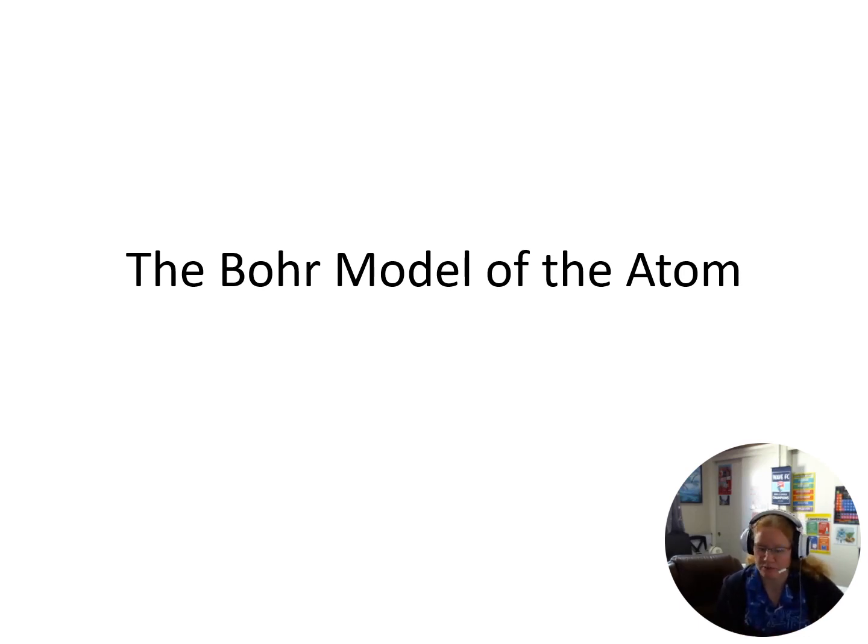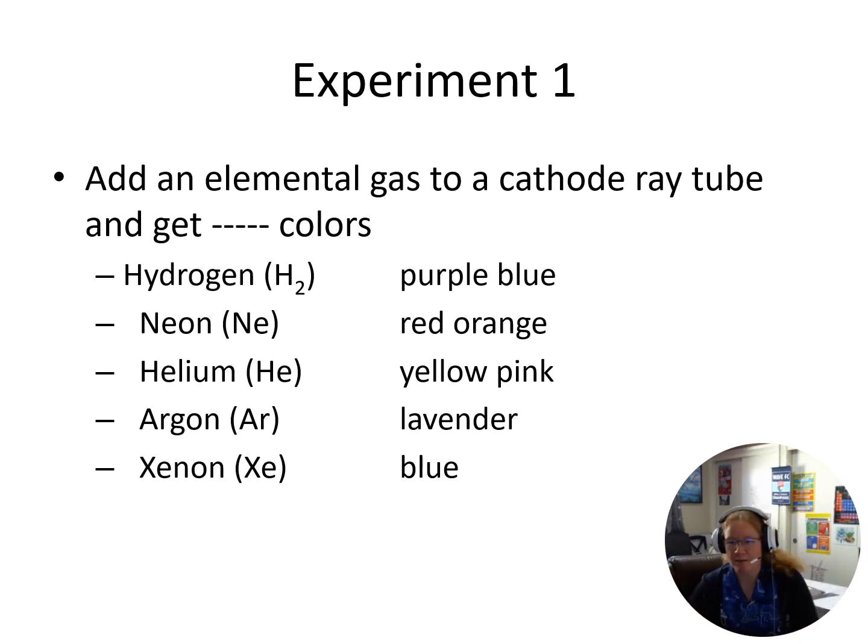So some experiments were done. The first experiment was if we take an elemental gas and we put it in a cathode ray tube, we would get colors, several different colors. Hydrogen gave us this bluish-purple, neon was this red-orange. And that's where neon signs come from, is neon added to these cathode ray tubes. That's why all the classic neon signs are this reddish-orange color, because it's all neon gas.